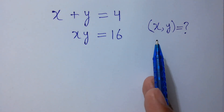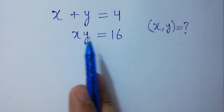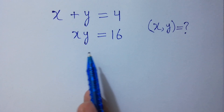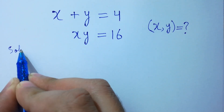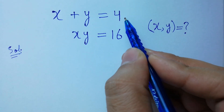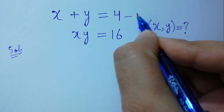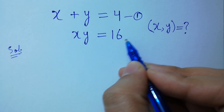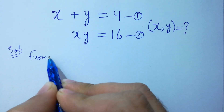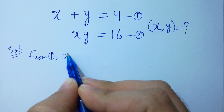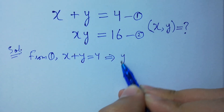Hello friends. Find the value of x and y if x plus y equals 4 and xy equals 16. Let's have a solution. Let this be the first equation: x plus y equal to 4. And xy equal to 16 is the second equation.